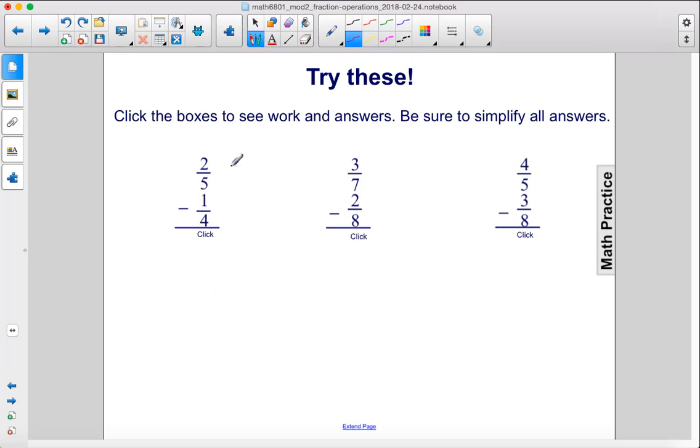Try these. Click the boxes to see work and answers. So, 2 fifths minus 1 fourth. Let's do a common denominator of 20, which is just multiplying 4 and 5 together. The numerators would be 8 and 5. So, 8 minus 5 gives us 3 over 20.